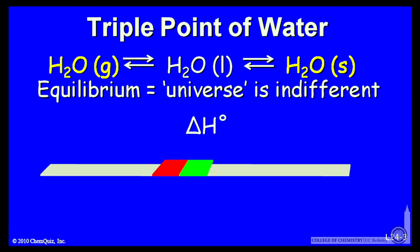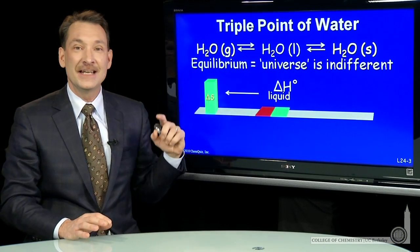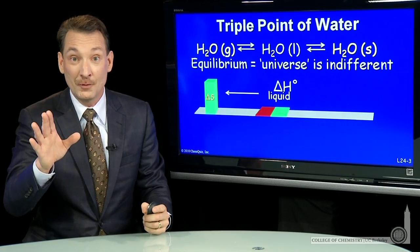So liquid to gas transition: you go from the constrained liquid to the dispersed microstates of the gas. That's an increase in entropy for the system only.